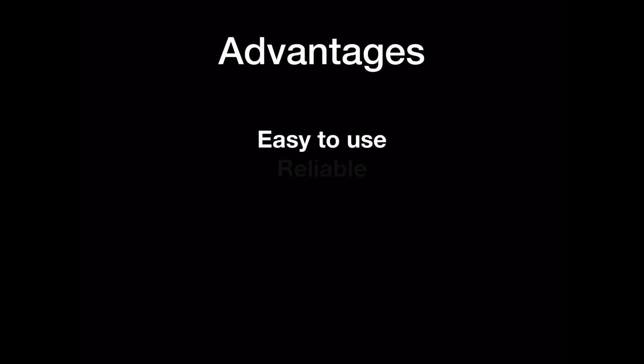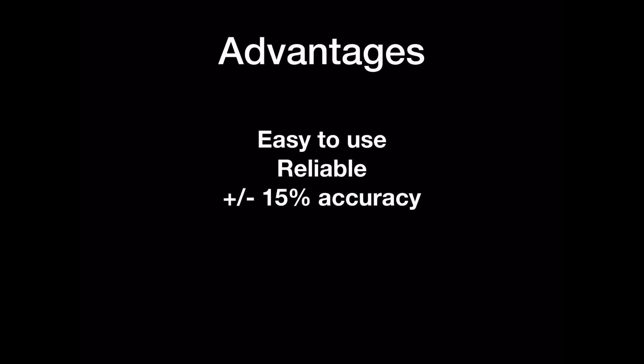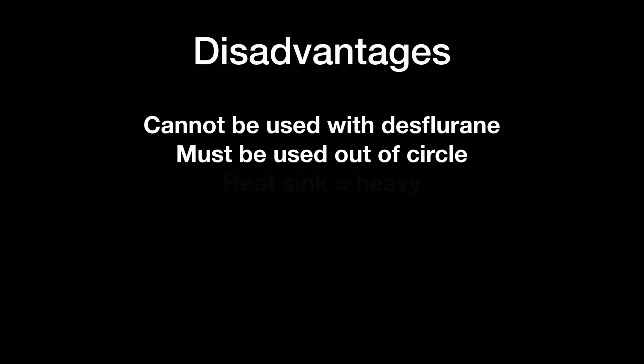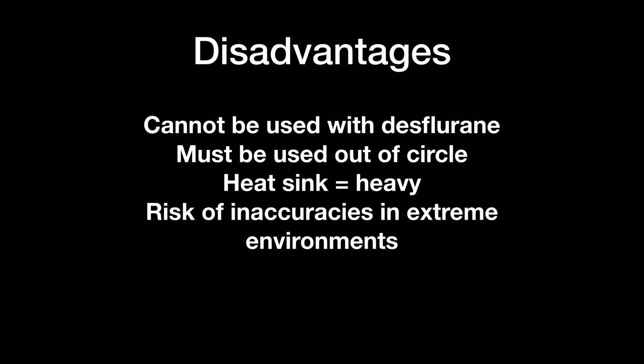Advantages: the plenum vaporizer is easy to use, it is reliable, and when calibrated it is accurate to plus or minus 15% of what is read on the dial. No power source is needed. Disadvantages: it cannot be used with desflurane, it must be used out of circle secondary to its high internal resistance, and the heatsink is heavy, meaning the plenum vaporizer is not easily used in remote settings. If it is used in an extreme environment, anaesthetic may be delivered but there is a risk of inaccuracy.